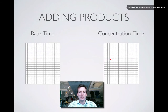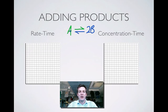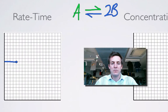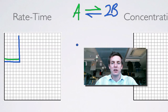Moving on to adding products, with a slightly different reaction where A turns into 2B in the forward reaction, and 2B turns back into A in the backward reaction. If I add some products to this system, the backward and forward reactions are going along at the same rate because we are at equilibrium. Then I suddenly chuck in a load of B. B isn't involved in the forward process, so it's not going to change the rate of the forward reaction, but the backward reaction is going to suddenly speed up because I've got a higher concentration of B particles, so there's a greater chance of them colliding with one another.